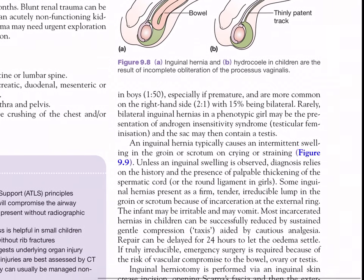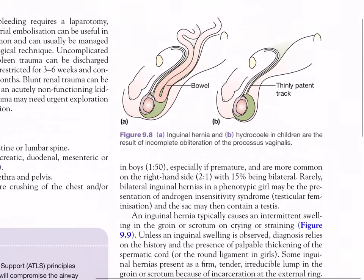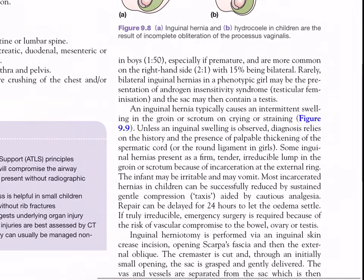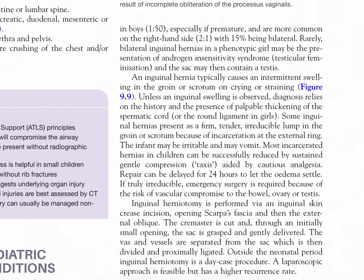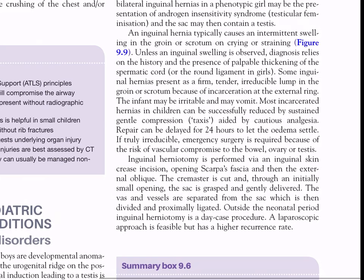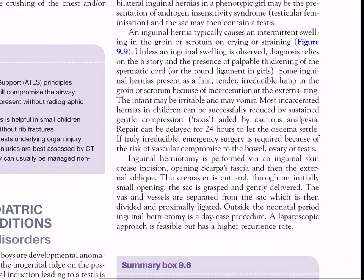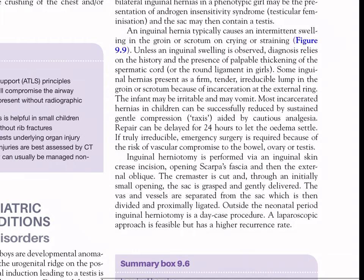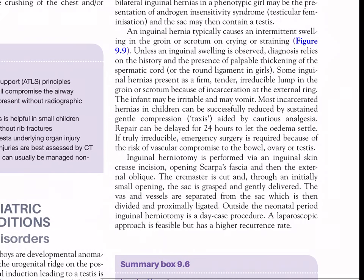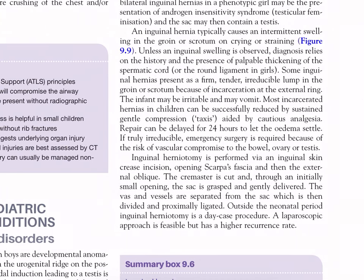Inguinal hernia typically causes an intermittent swelling in the groin or scrotum on crying or straining. Unless an inguinal swelling is observed, diagnosis relies on the history and the presence of palpable thickening of the spermatic cord or the round ligament in girls. Some inguinal hernias present as a firm, tender, irreducible lump in the groin or scrotum because of incarceration at the external ring. The infant may be irritable and may vomit. Most incarcerated hernias in children can be successfully reduced by sustained gentle compression, aided by cautious analgesia.